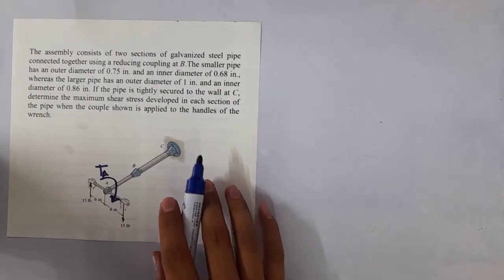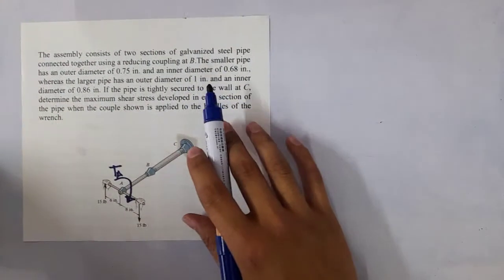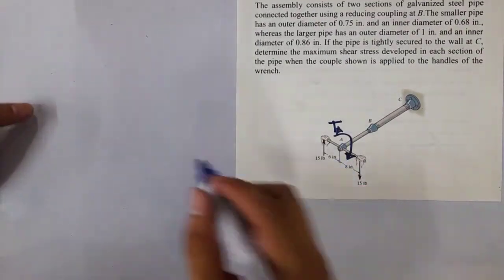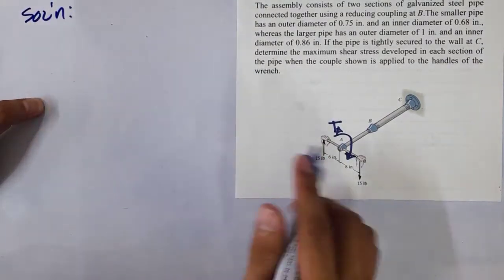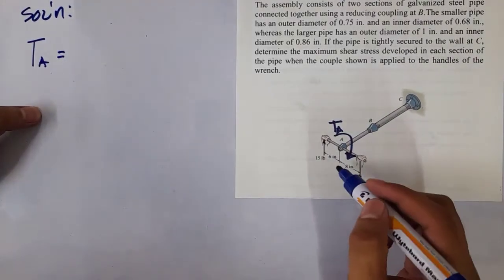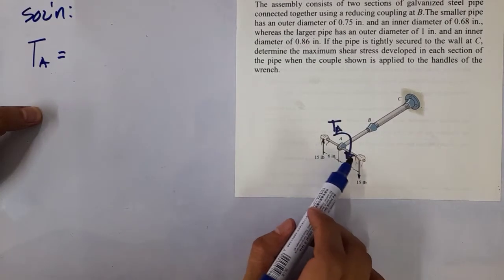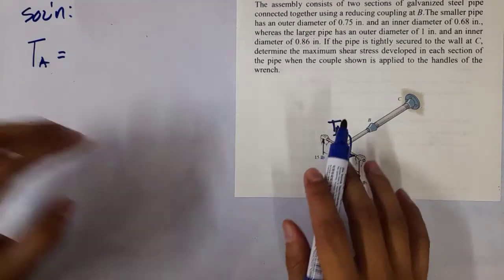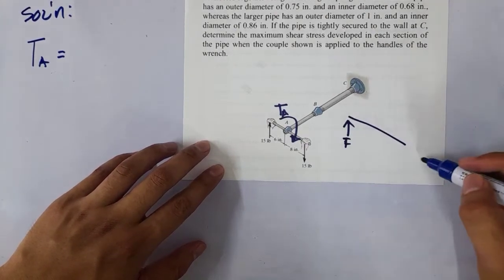We want to get the maximum shear stress. Let's solve first for the torque at A. The torque at A equals the forces times their moment arms. Since we don't have a uniform moment arm — we have 6 inches on one side and 8 inches on the other — we compute each moment separately.